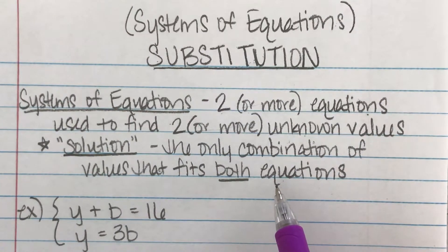And then your solution is the only combination of values that fits both equations. So we were looking at these mystery cups where you had like different candies involved, right? And you had yellow candies and blue candies.